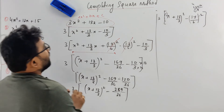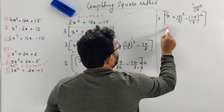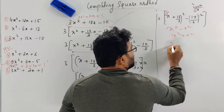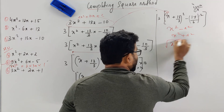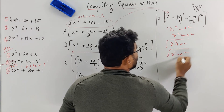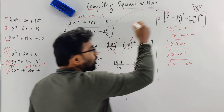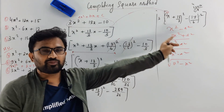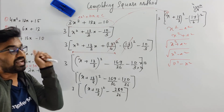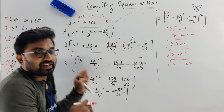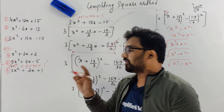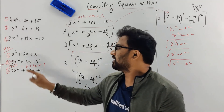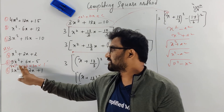You convert into the format — it can be x squared minus a squared, x squared plus a squared, root of x squared minus a squared, root of a squared plus x squared — there are a lot of forms in integration. You have to convert a given question into this format and then start integrating. This method is called the Completing Square Method. It's very important. Try yourself these three questions: x squared plus 2x plus 2, 9x squared plus 6x minus 5, and 3x squared plus 2x plus 1.